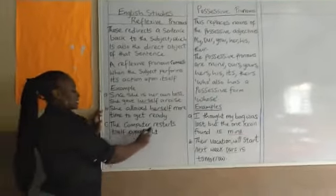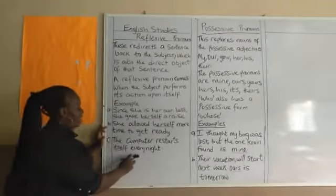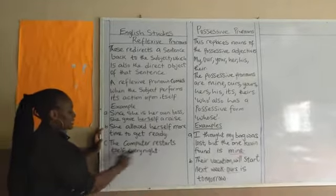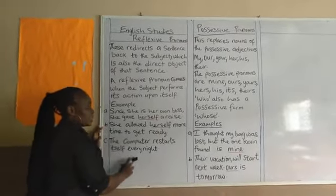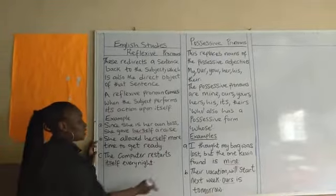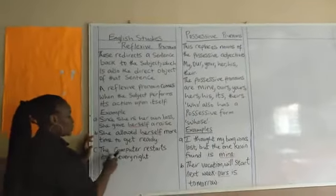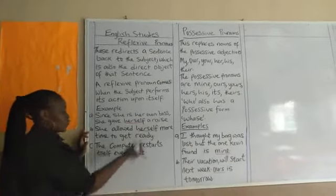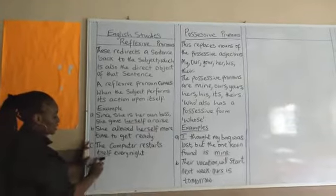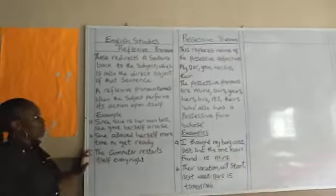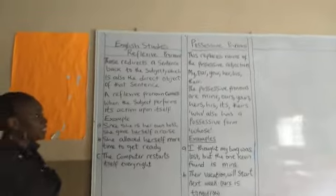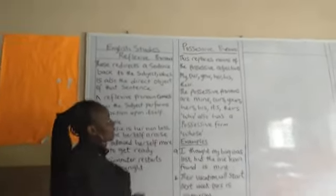The computer restarts itself every night. So the computer is the subject of the sentence, and it does something to itself. So it becomes both the subject and of course the object in our sentence. We use 'itself' here — it becomes our reflexive pronoun.